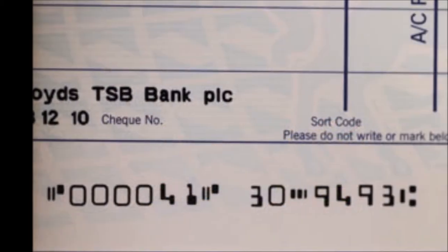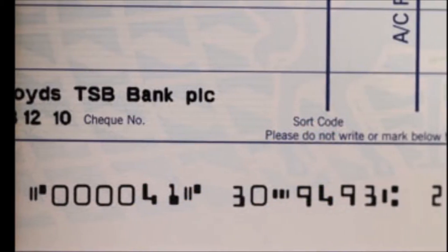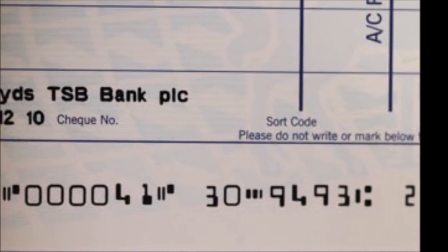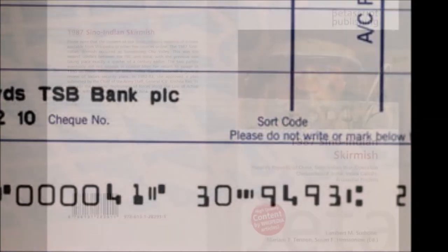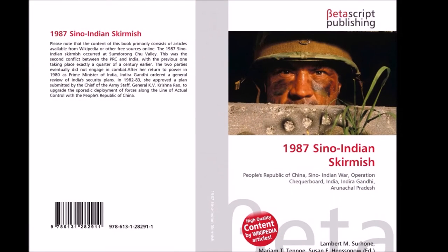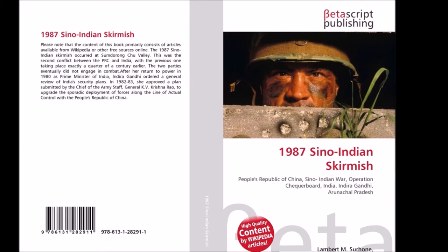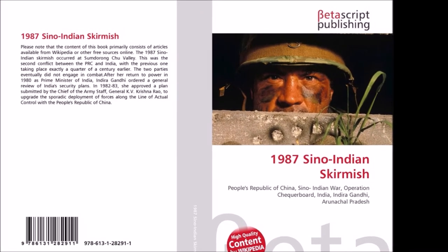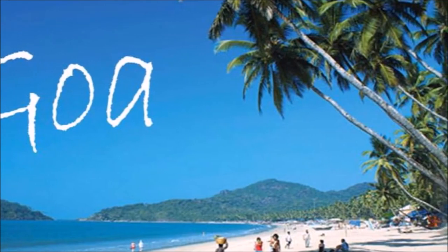1987: Magnetic Ink Character Recognition technology was introduced for cheques. A second conflict between India and China took place. This year, Goa became a state.